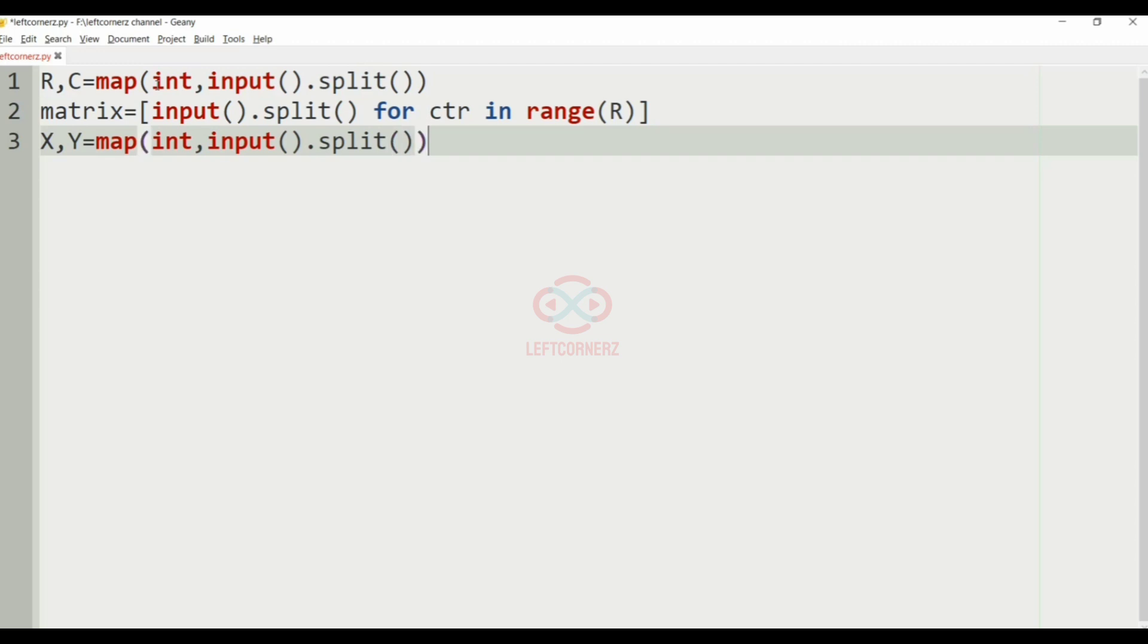And after getting our inputs, now we'll do the further modifications. That is, now X, Y will be equal to X minus 1 and Y minus 1, as we know index starts from zero, so X is X minus 1 and Y is Y minus 1.